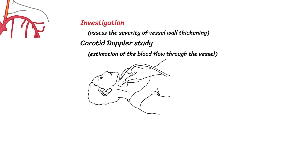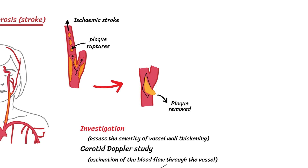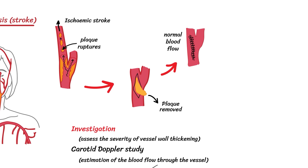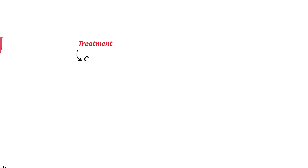If the plaque is severe enough, the artery can be surgically cut open and the atheromatous tunica intima — the plaque — can be removed to restore blood flow. This procedure is referred to as a carotid endarterectomy. If this is not possible, there is also carotid angioplasty and stenting which can be done.